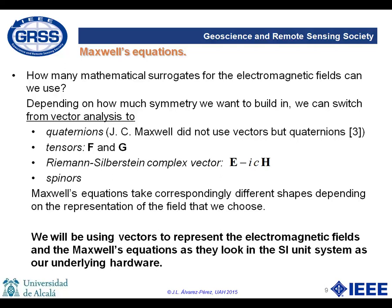These alternative mathematical objects are tensors, complex vectors of the Riemann-Silverstein type, or spinors. We also mention quaternions, even if we should have said Clifford algebras instead. All these objects allow us to build in different levels of symmetry inside the descriptors of the fields. Outside this page, only vectors are considered in this tutorial.